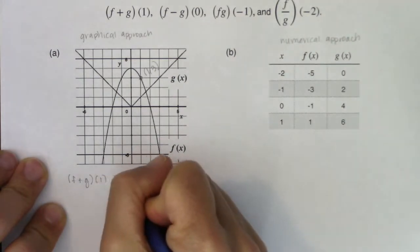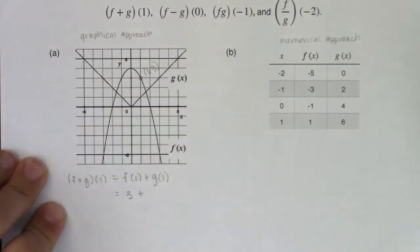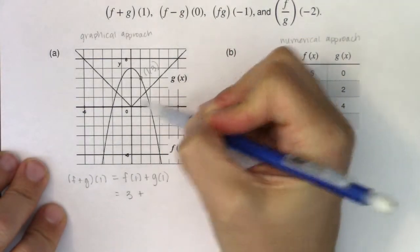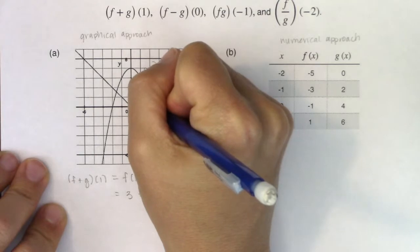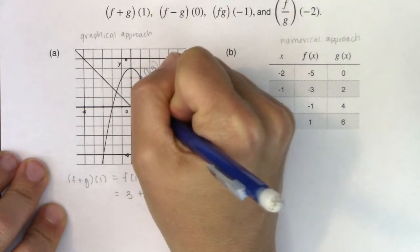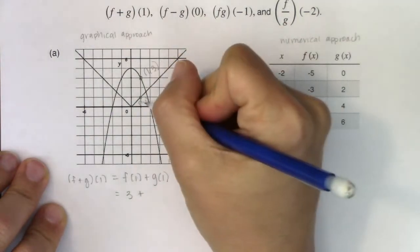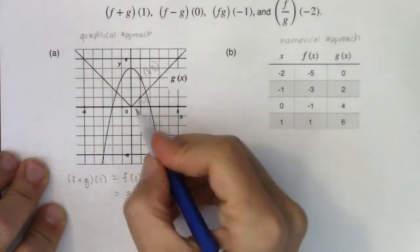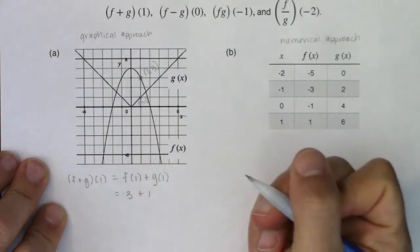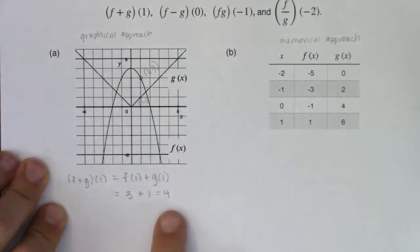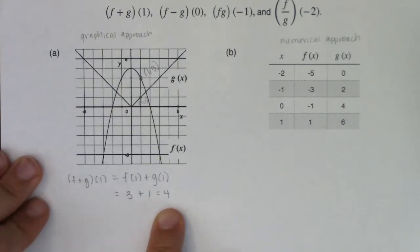So this is going to be three plus whatever g of one is equal to. I'm still at an x coordinate of one but now I'm on the absolute value function, and that looks to be the ordered pair (1, 1). I need the y value which is one. So f plus g evaluated at one is ultimately four.